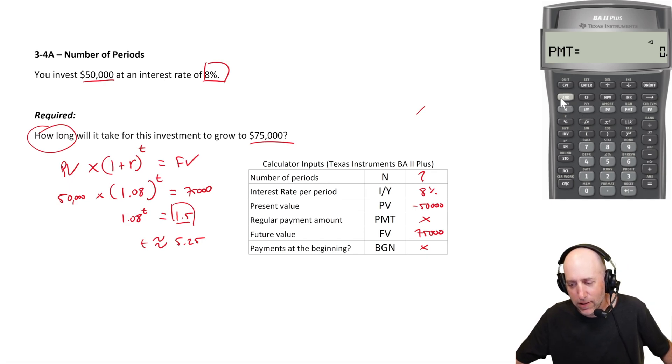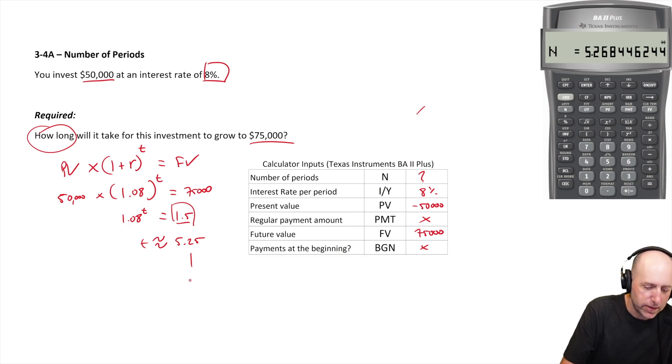I could... oops, no, zero is PMT. I think I put in $75 as PMT there by mistake. Anyway, I think we're good now, I've fixed my PMT. Now we want to compute the number of periods, so I say compute N and I get 5.268.